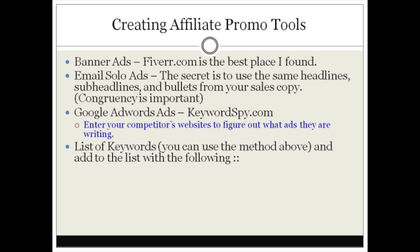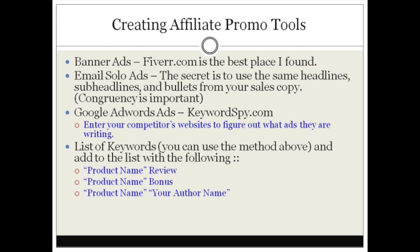Also create a list of keywords — you can use the method above to grab a list of keywords. Here are some ideas: your product name plus 'review', your product name plus 'bonus', your product name plus your name as the author, and so forth. These are a list of promotional tools that you can go ahead and place onto your affiliates page right away.